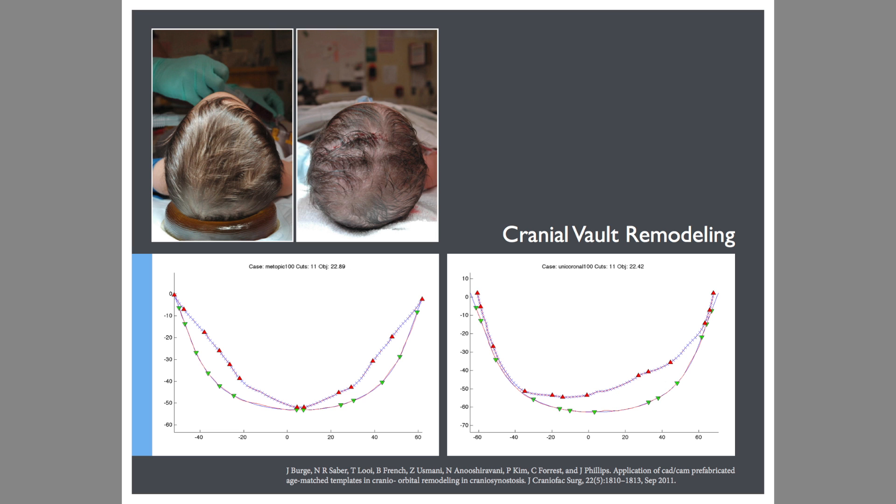To correct this condition, patients undergo a form of surgery called cranial vault remodeling. The surgeon removes a piece of the skull, often as small as 10 centimeters wide, and cuts it in several places, reshaping it into a suitable curve.